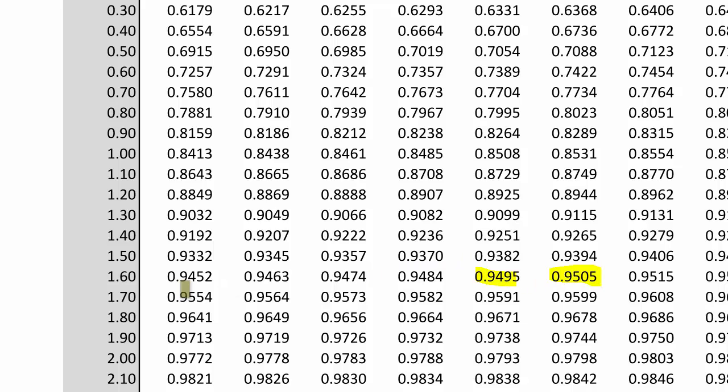And here we have two values 0.9495 and 0.9505. That's between 1.64 and 1.65. These are the two Z values that relate to these two values.